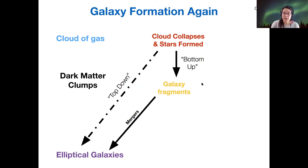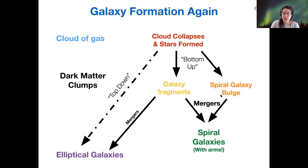And this bottom-up process is not just for making elliptical galaxies. That's also what creates our spiral galaxy bulges. And also the globular clusters in their halos. And then those,